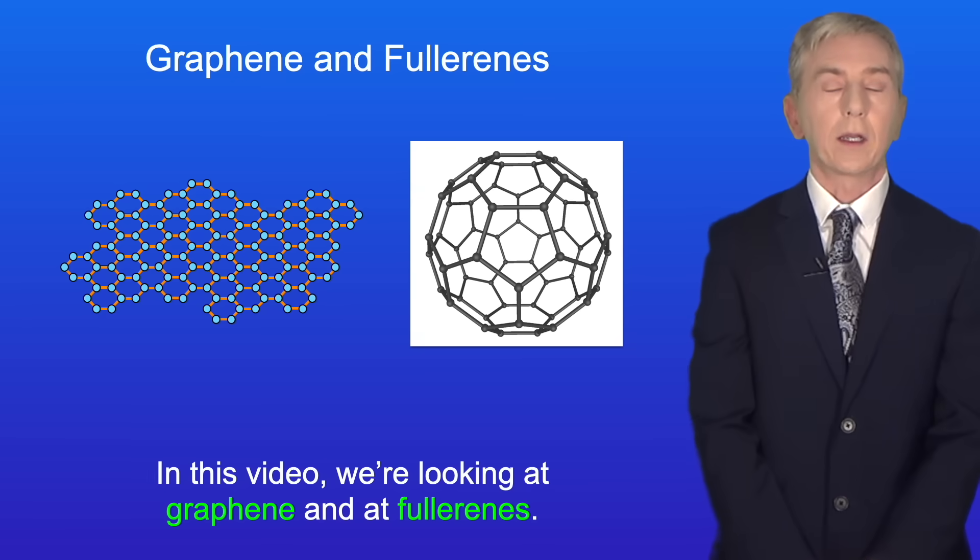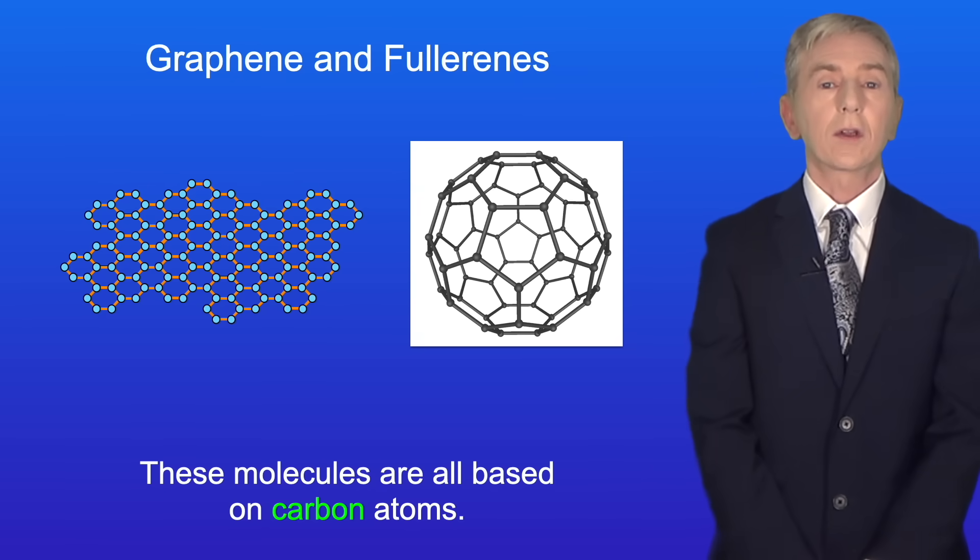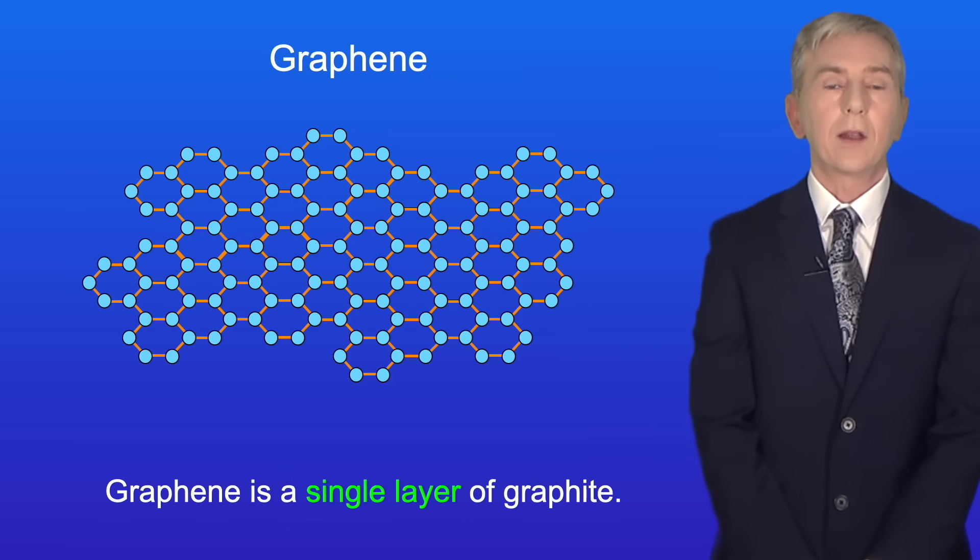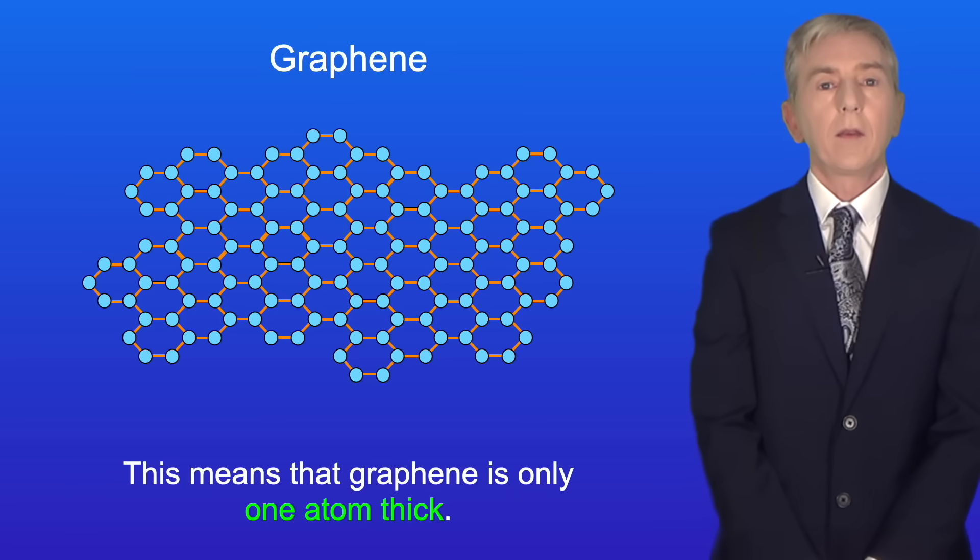Now in this video we're looking at graphene and at fullerenes. These molecules are all based on carbon atoms. Let's start by looking at graphene. Graphene is a single layer of graphite. This means that graphene is only one atom thick.